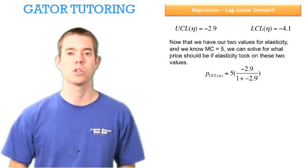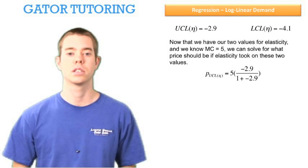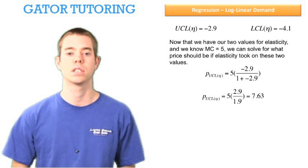The price for the upper control limit of elasticity of demand would be 5, the marginal cost, times the negative 2.9 over 1 plus negative 2.9, or the price for the upper control limit of elasticity of demand is equal to 7.63.